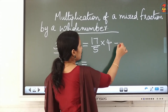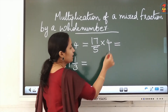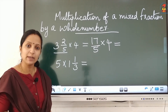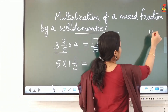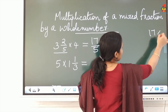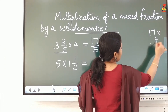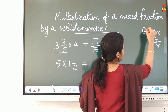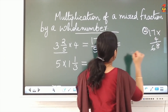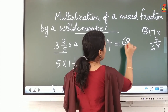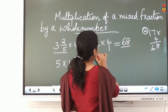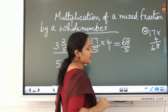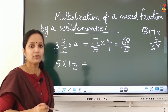We now have a multiplication of a fraction by a whole number, which we already learned. Multiply the numerator: 17 into 4 equals 68. Write the same denominator: the answer is 68 by 5.